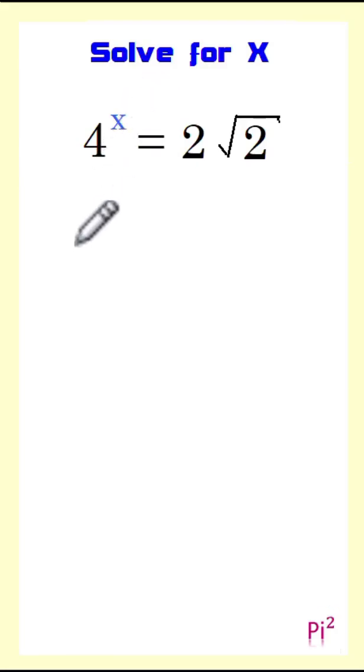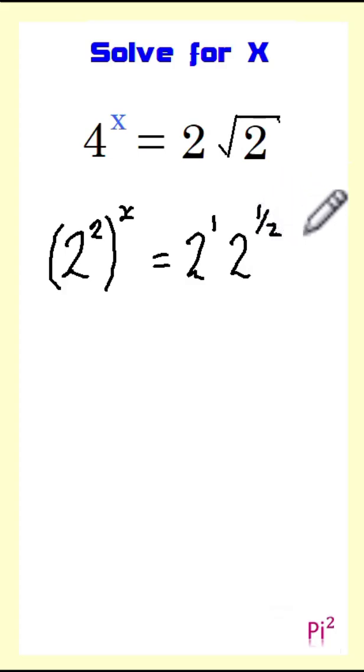Let's rewrite 4 to the power of x as 2 to the power of 2 raised to the power of x, and let's rewrite the right hand side as 2 to the power of 1 multiplied by 2 to the power of a half.